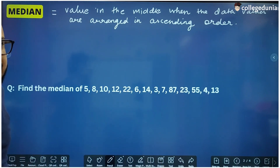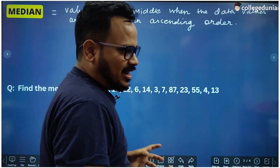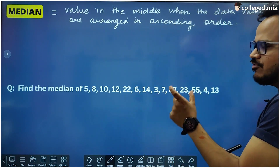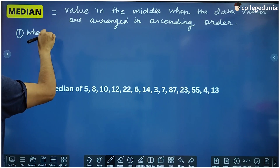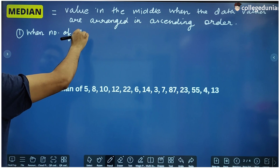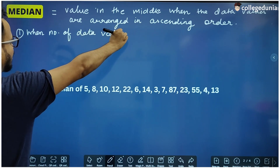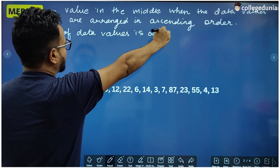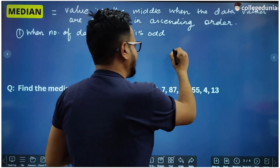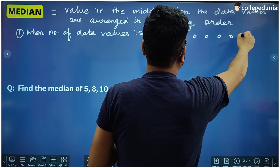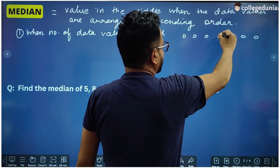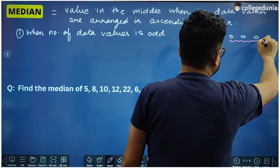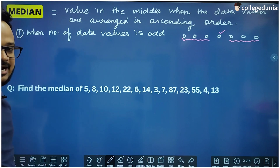When the data values are arranged in ascending order, two cases arise. The first case is when the number of data values is odd. For example, let's say there are seven data values: 1, 2, 3, 4, 5, 6, 7. The value appearing at the middle-most position — if we leave three values from the left side and three values from the right side — that value is the one at the middle.